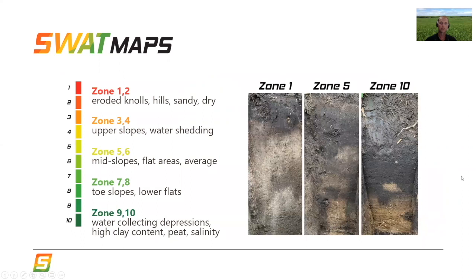SWAT maps always have 10 zones. We make them relatively high resolution to match today's equipment and future abilities of equipment to apply things at a really high resolution, and it can accommodate even the most variable landscapes. The one thing that's common with all SWAT maps, no matter where they are, is zone one will always be the driest part of the field, whether due to texture, landscape position, or often both.